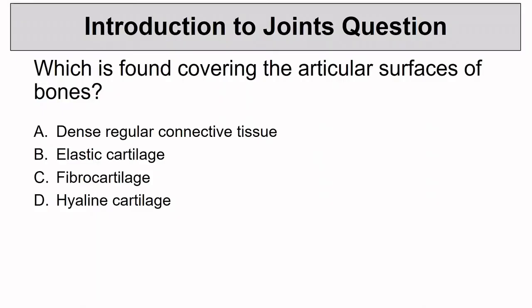For our first question: which tissue is found covering the articular surfaces of bones? Is it dense regular connective tissue, elastic cartilage, fibrocartilage, or hyaline cartilage? Pause so you can choose your answer and maybe write out something you remember about each option. Let's start with dense regular connective tissue — what does this make up? That'll make up ligaments connecting bones to other bones, and tendons connecting muscles to bones.